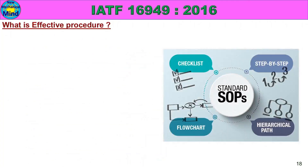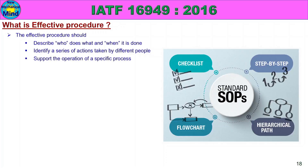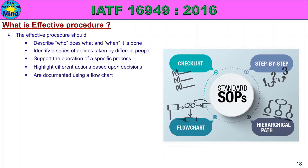What is an effective procedure? The effective procedure should include the following necessary items: first, describe who does what and when it is done; identify a series of actions taken by different people; support the operation for a specific process; highlight different actions based upon decisions; and be documented using a flowchart.